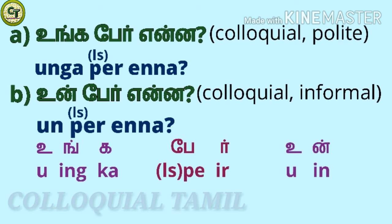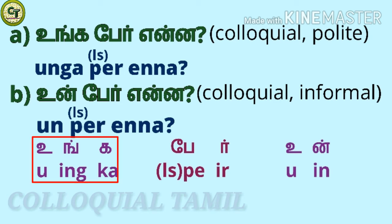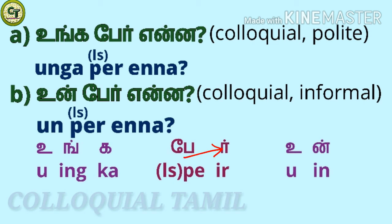The colloquial polite form is 'unga pair enna.' For 'unga,' you just remove the consonant 'ill' at the end of 'ungal.' While speaking, 'pair' may sound as 'pair' — a long zone letter, 'ir' a consonant, together: 'pair.' So: 'unga pair enna.'